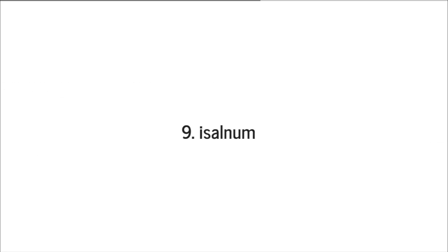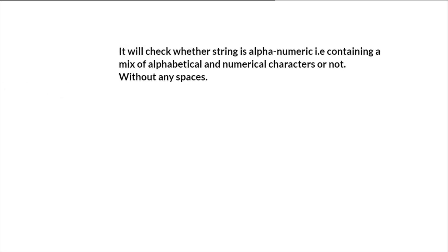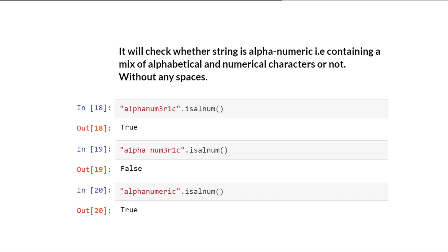We also have some format-checking methods. isalnum checks whether a string is alphanumeric — meaning it contains a mix of alphabetical or numerical characters — and it should not contain any whitespace. For example, this is alphanumeric, but this is not because it has a space, and this again is alphanumeric.